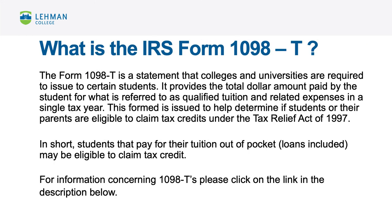Form 1098-T is a statement that colleges and universities are required to issue to certain students. It provides the total dollar amount paid by the student for qualified tuition and related expenses in a single tax year. This form helps determine if students or their parents are eligible to claim tax credits under the Tax Relief Act of 1997. In short, students that pay for their tuition out of pocket — loans included — may be eligible to claim tax credit. For information concerning 1098-Ts, please click on the link in the description below.